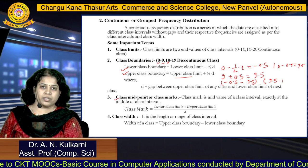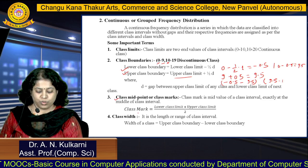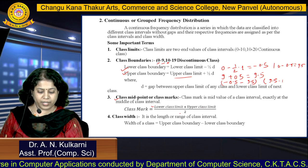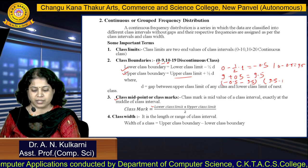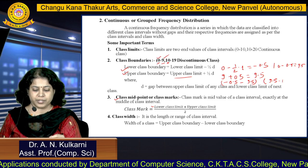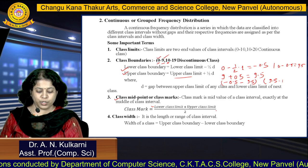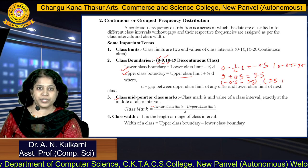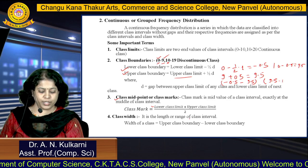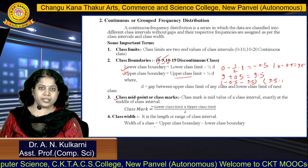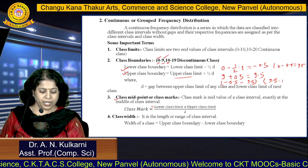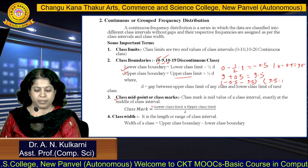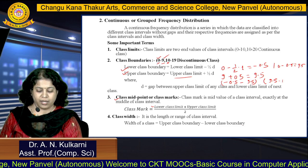Next, class midpoint or class marks. How you calculate class mark? It is nothing but lower class limit plus upper class limit divided by 2. Here lower class limit is 0, upper class limit is 9, so 0 plus 9 divided by 2 is the class midpoint. Now, what is class width? It is the length or range of the class interval, equal to upper class boundary minus lower class boundary.